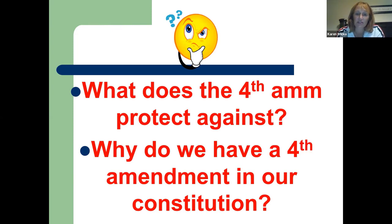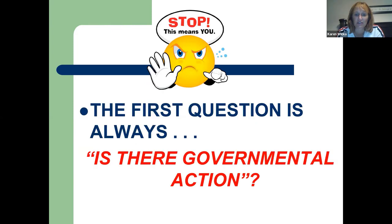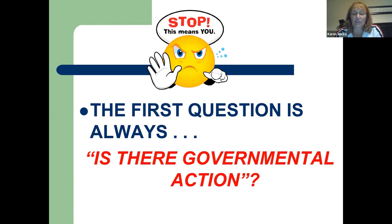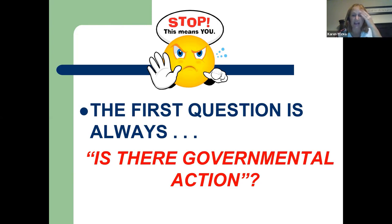The first police procedure we're going to talk about is search and seizure. Before we go any further, it's really important to understand that the first thing you always need to figure out is: is there governmental action? The Fourth Amendment — the constitutional amendment — only protects you against governmental action. Even the First Amendment's free speech protection only applies to what the government does against you. So the first question is always: is the government conducting an unlawful search and seizure?